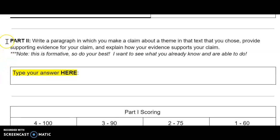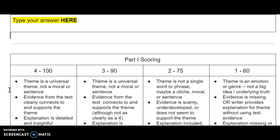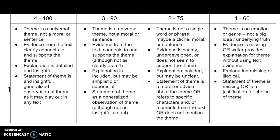Part 2: Write a paragraph in which you make a claim about a theme from the text that you chose. Provide supporting evidence for your claim and explain how your evidence supports that claim. Please note Part 2 is a formative, so do your best — your teachers want to see what you already know and what you are able to do. Please type your answer here. Don't forget to look at your rubric and click to understand how this assessment will be graded.